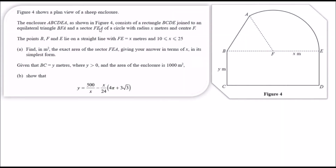Welcome back. In this video we'll be looking at differentiation. We're given an enclosure ABCDEA as shown in the figure, which consists of a rectangle of length y joined to an equilateral triangle, so we've got 60 degrees on each side — all angles and lengths are the same — and a sector FEA.